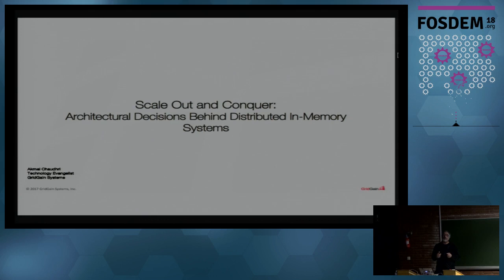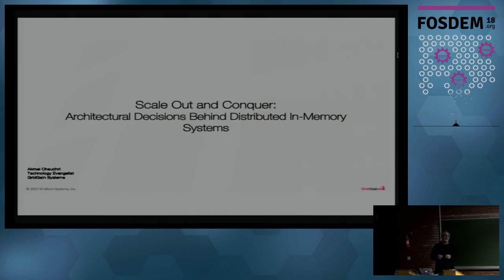Ignite started life as an in-memory data grid. There are some commercial products out there you may be familiar with — Hazelcast, Oracle Coherence. Ignite is also a key-value store; you may be familiar with Redis, for example, which is a fabulous, very fast product as well. But one of the things I think we have particularly when building distributed systems is that it imposes all sorts of issues and problems for us, and there are some architectural choices that we need to make — because building distributed systems is hard.